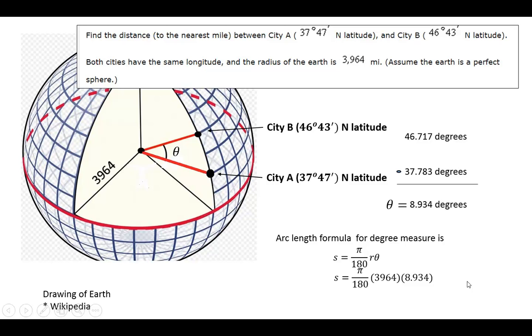the arc length equals pi divided by 180 times 3964 times 8.934, which is approximately 618 miles. I hope that was helpful.